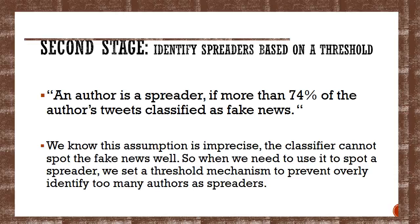Our assumption is an author is a spreader if more than 74% of the author's tweets was classified as fake news. We know this assumption is imprecise. The classifier cannot spot the fake news very well, so we need to use it to spot a spreader. We set a threshold mechanism to prevent overly identifying too many authors as spreaders.